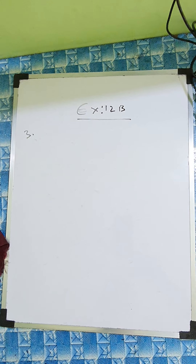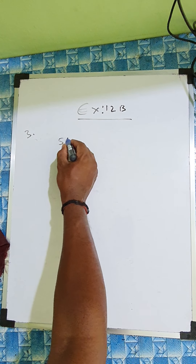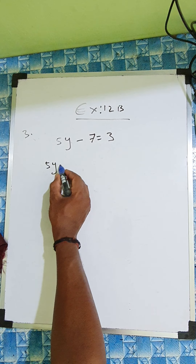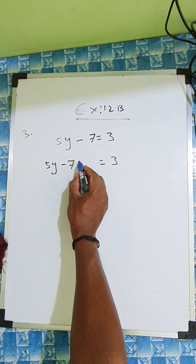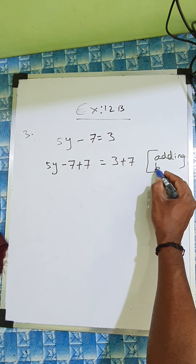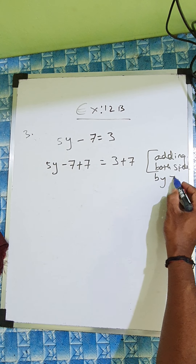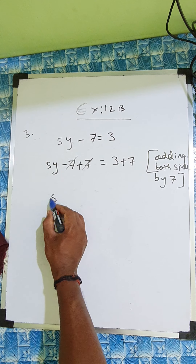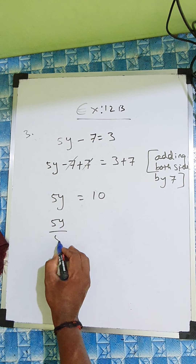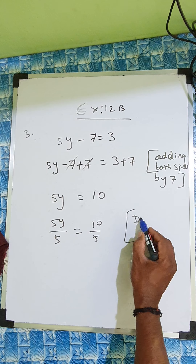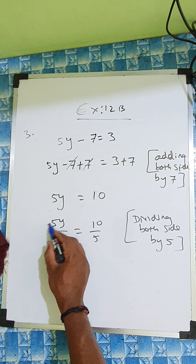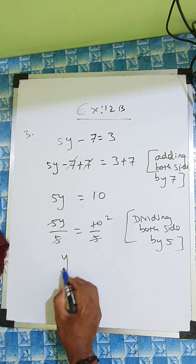Now the second equation in question 3: 5y minus 7 equal to 3. So here minus 7, we put plus 7 on both sides — adding both sides by 7. So these two cancel, 5y equal to 3 plus 7 is 10. Now divide both sides by 5. So 5 cancels, y equal to 10 divided by 5, which is 2.